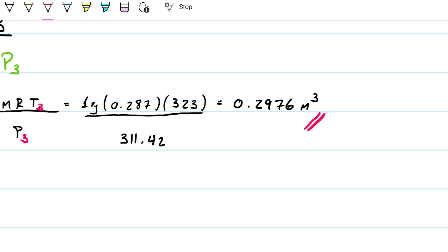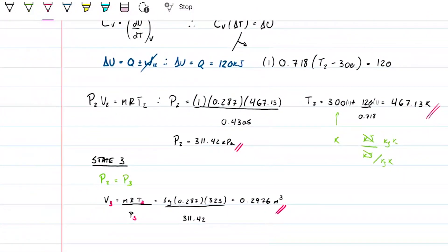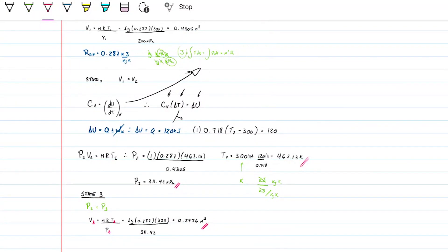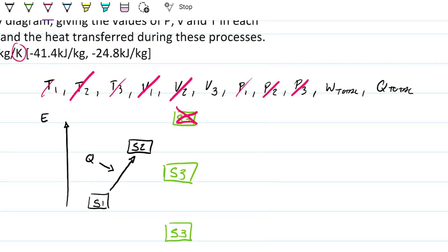This is interesting, because not only do I know the volume now, but I also know the volume and temperature have changed from state 2 to 3, and note that both of them have decreased. We're going from a volume of 0.4 to a volume of 0.3, and from a temperature of 467 down to 323. So I can eliminate the possibility of greater energy — the pressure is the same, and temperature and volume are less.